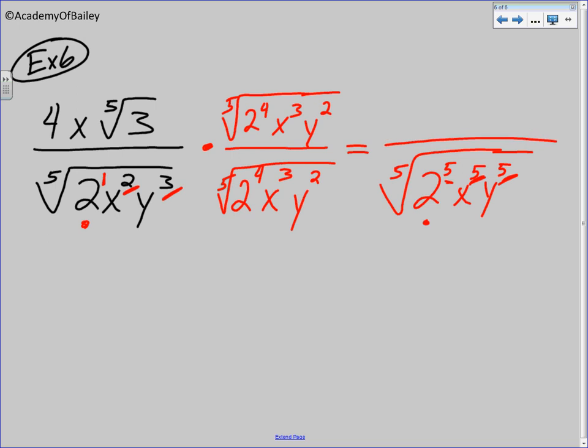And so far, we need to do that on the top also. On the bottom, that is what we have, but we do know that... Well, we do know that the fifth root of 2 to the fifth is just 2. The fifth root of x to the fifth is just x, and the fifth root of y to the fifth is just y.